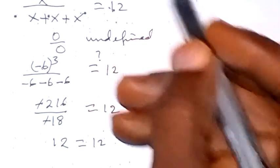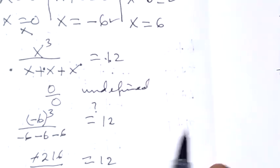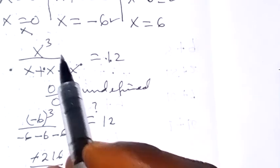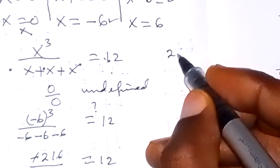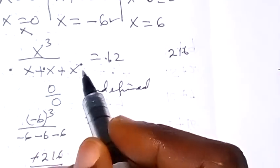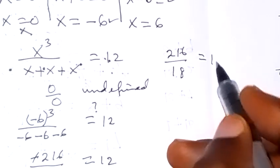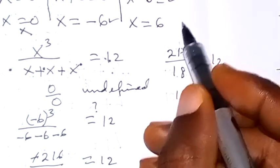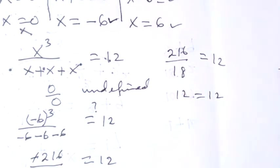Therefore, minus 6 is a solution. Equally, when we put x equals to 6, we find 6 raised to power 3 is 216, and 6 plus 6 plus 6 is 18. So 216 divided by 18 equals 12, which equals 12. So 6 is also a solution. We have two solutions: x equals minus 6 and x equals 6.